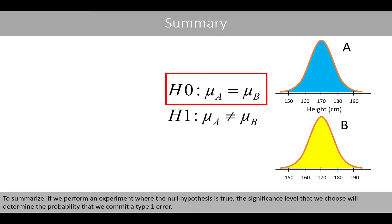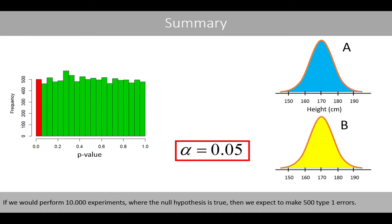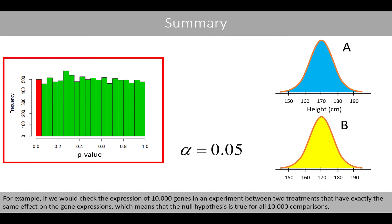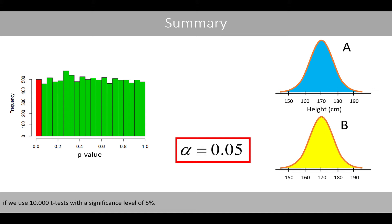To summarize, if we perform an experiment where the null hypothesis is true, the significance level we choose will determine the probability that we commit a type 1 error. If we choose a significance level of 0.05, then there is a 5% risk of committing a type 1 error. If we perform 10,000 experiments where the null hypothesis is true, we expect to make 500 type 1 errors. For example, if we check the expression of 10,000 genes between two treatments that have exactly the same effect on gene expressions — meaning the null hypothesis is true for all 10,000 comparisons — then we would expect 500 false positive results using 10,000 t-tests with a significance level of 5%.